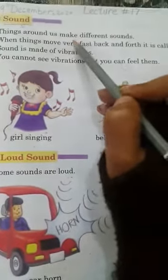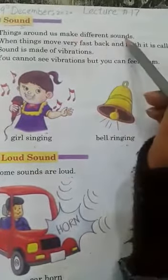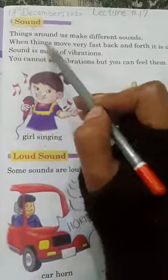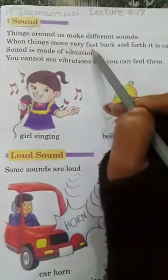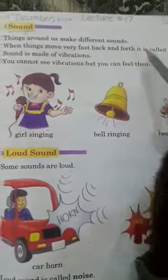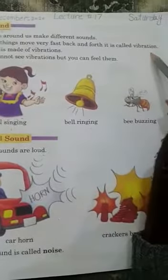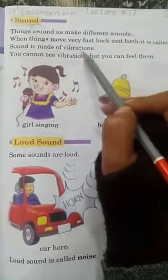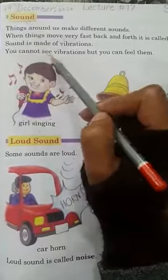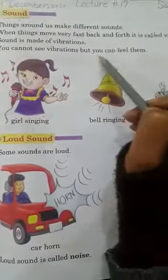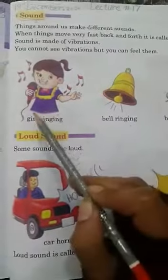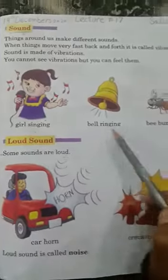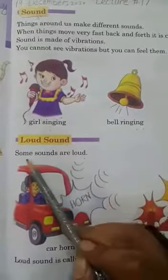When things move very fast back and forth, it is called vibration. Sound is made of vibration. You cannot see vibration but you can feel them. Examples include a girl singing and a bell ringing — these are all sounds made by vibration.